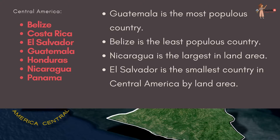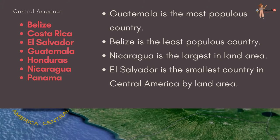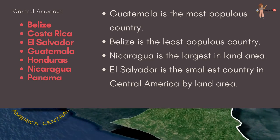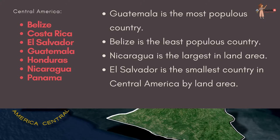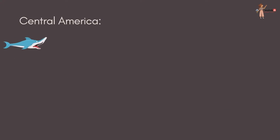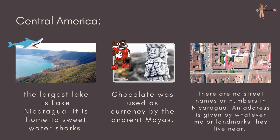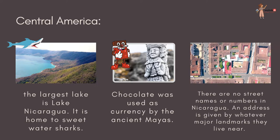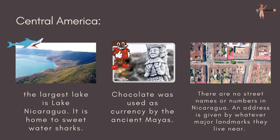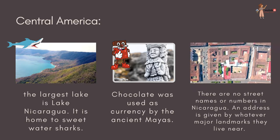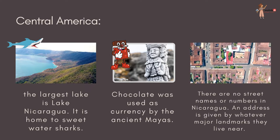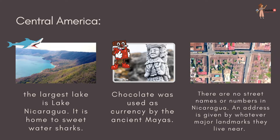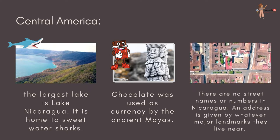Guatemala is the most populous country in Central America, while Belize is the least populous. Nicaragua has the largest inland area, and El Salvador is the smallest country in Central America by land area. The largest lake is Lake Nicaragua, which is home to freshwater sharks. Chocolate was used as currency by the ancient Mayas. There are no street names or numbers in Nicaragua — an address is given by whatever major landmarks are nearby.